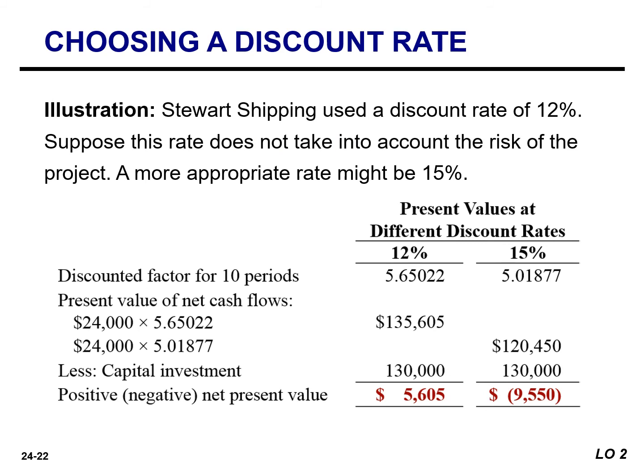Using an incorrect discount rate can lead to incorrect capital budgeting decisions. Consider the Stewart Shipping example, where we used a discount rate of 12%. Suppose that rate does not account for the fact that this project is riskier than most of the company's investments. A more appropriate discount rate, given the risk, might be 15%. At that higher rate, the net present value is negative, and the company should reject the project.